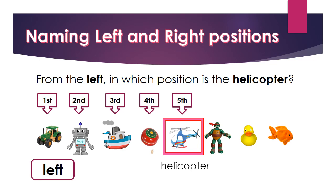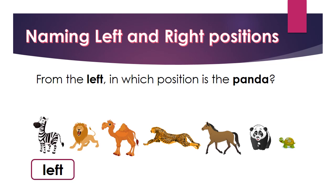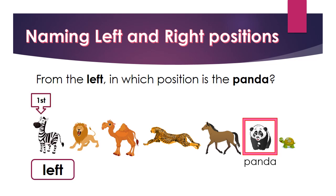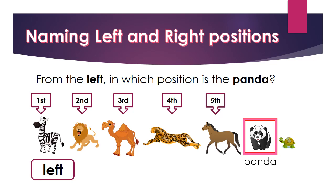Now from the left, in which position is the helicopter? The helicopter is here. From the left, the helicopter is first, second, third, fourth, fifth — the helicopter is fifth from the left.